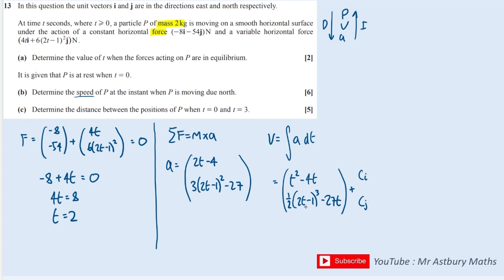We need some information to work out those constants. P is at rest when T equals 0, so that means v equals 0 at T equals 0. Subbing in, I get 0 for the velocity. The top line will be 0, and the bottom line, minus 1 cubed is minus 1 times by a half, so minus a half, and the 27T will be 0. So ci must be 0 and cj is a half.